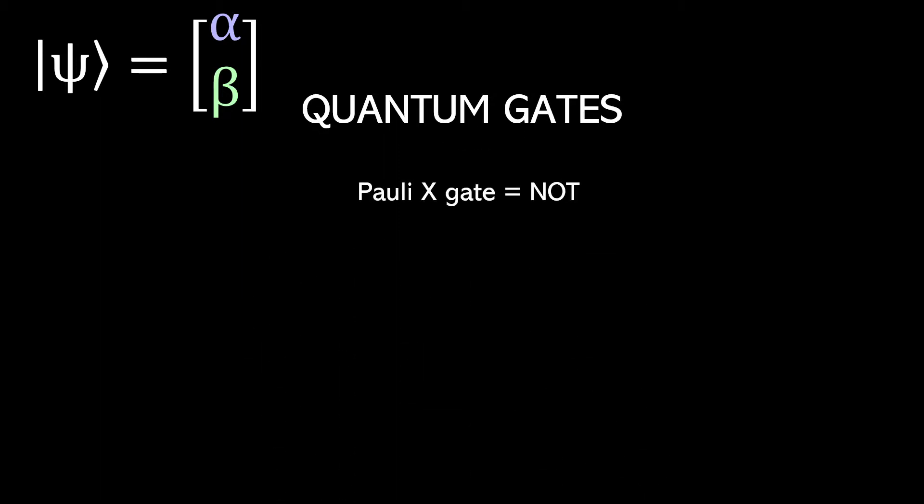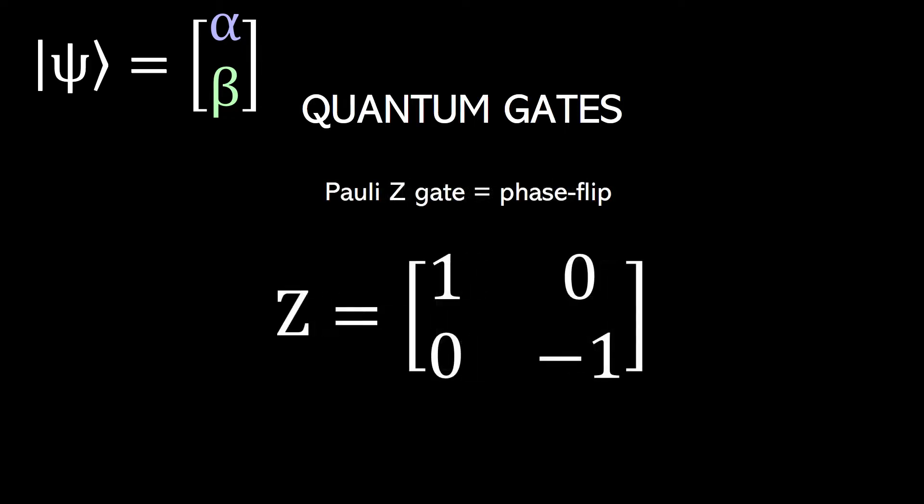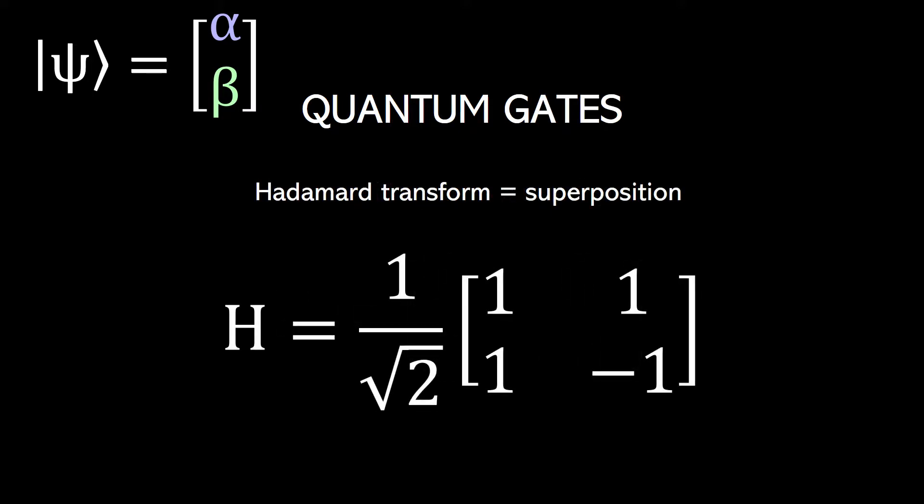So let's look at a few common quantum gates. The Pauli-X gate is the equivalent of a classical NOT gate. It looks like this, and right away you can probably see why it's a NOT gate. The Pauli-Z gate is a gate that doesn't really make sense in classical computing. It's called a phase flip gate, and it looks like this. The Hadamard transform is a gate that's really important in quantum programming because it turns a normal zero or one, a classical state, into an equal superposition of zero and one. It looks like this.